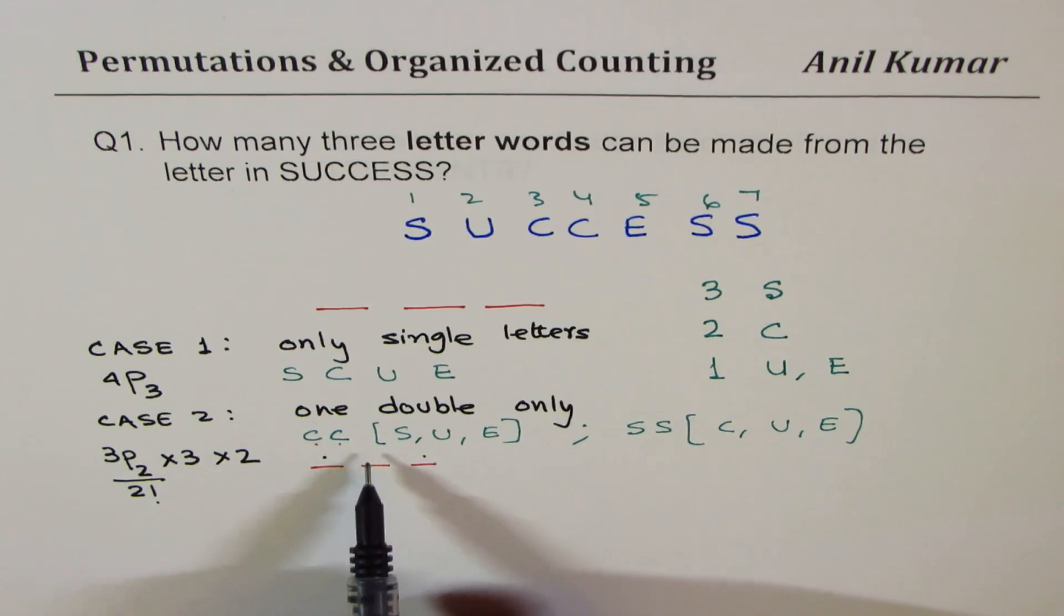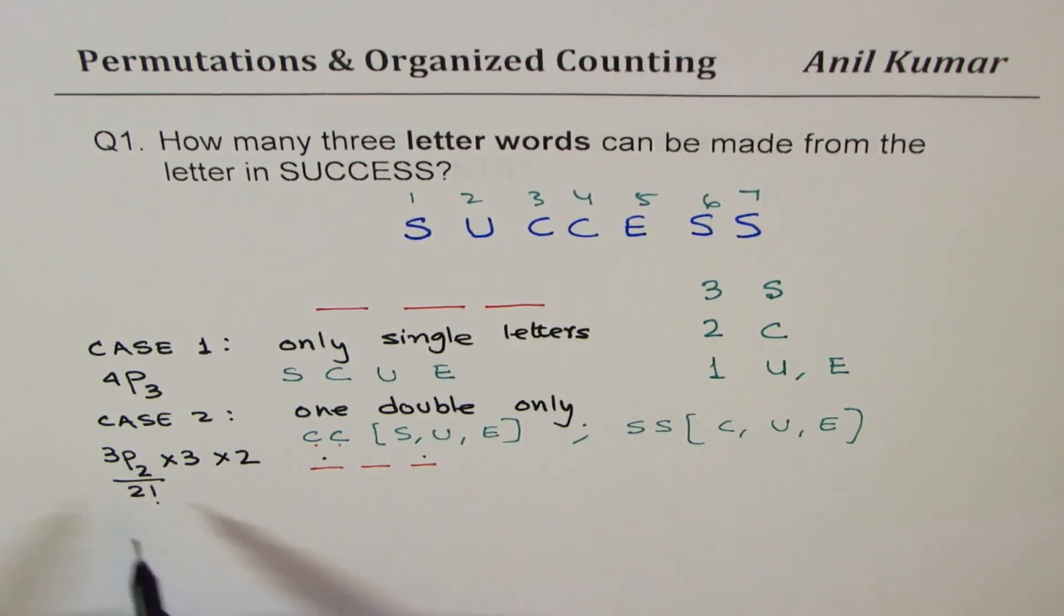Then three of these letters can come one by one, so times three. So we get with two C's. Now same story is to be repeated with two S. So that's what you get. Is it okay?